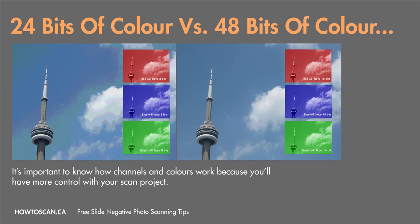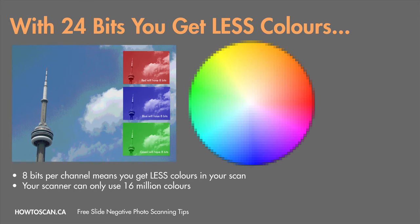The reason I want you to know all this technical stuff about RGB channels and colors is because it's important — later on, everything will make sense. So what does a 24-bit scan versus a 48-bit scan look like? When you scan at 24 bits, you have fewer bits per channel, meaning fewer colors to work with. Your scanner can use 16 million different colors to fill one pixel, but only one color can fill that pixel.